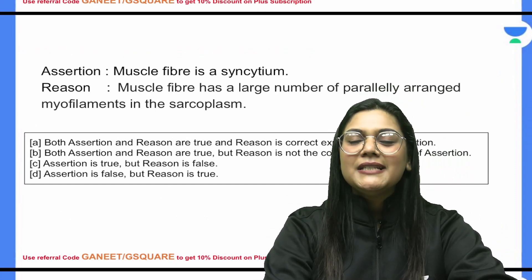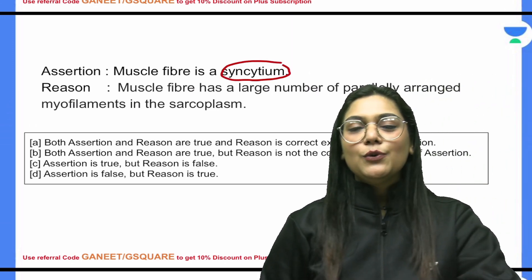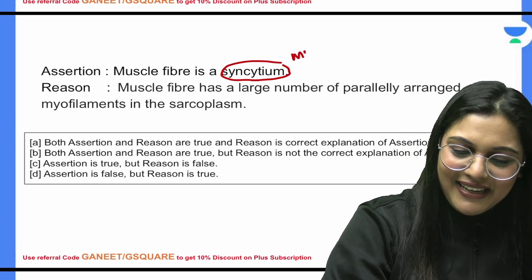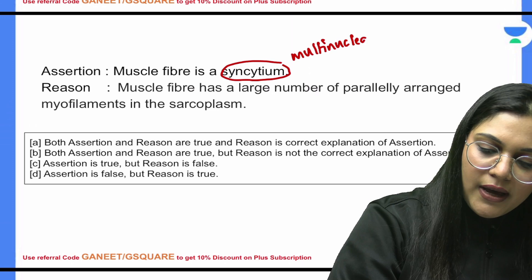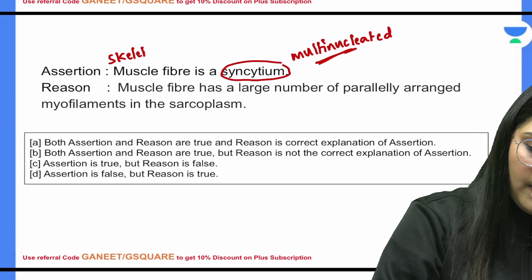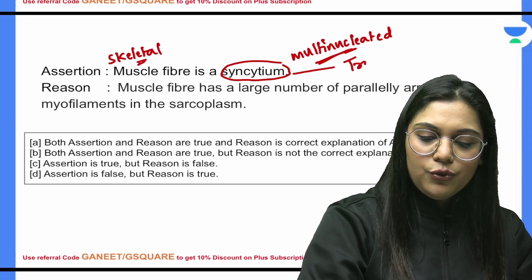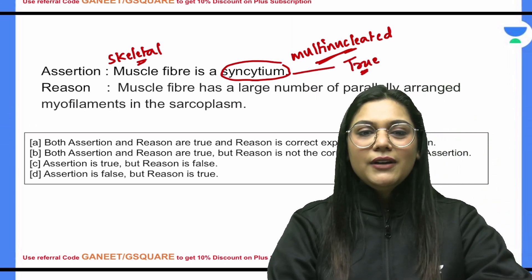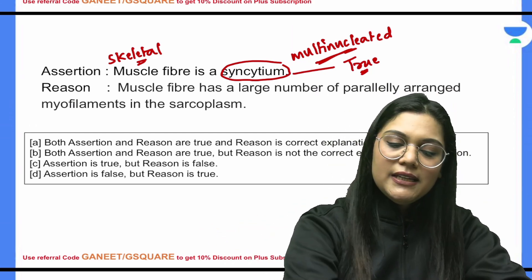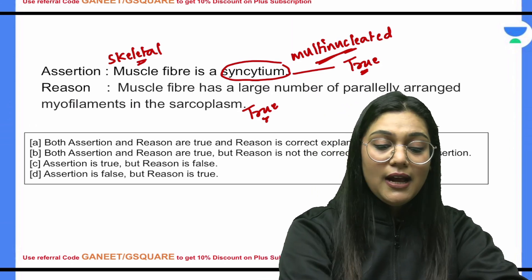Question 3: Muscle fiber is a syncytium. Syncytium means multinucleated. The skeletal muscle fiber is our syncytium — so this statement is true. The reason states that muscle fiber has a large number of parallelly arranged myofilaments in the sarcoplasm — this is also a right statement, but it does not explain why the muscle fiber is multinucleated. So the answer becomes B option.